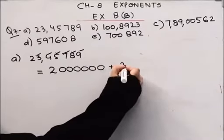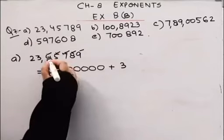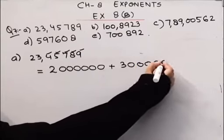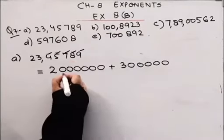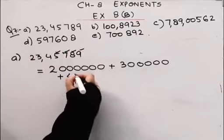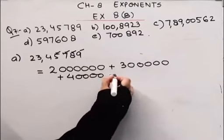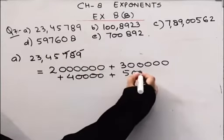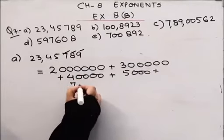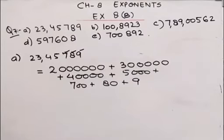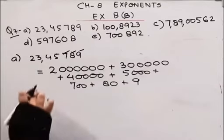Then I'll write 3 — how many zeros? 1, 2, 3, 4, 5. Plus I'll put 4 here — how many zeros? 1, 2, 3, 4. Then I'll put 5 — how many zeros? 1, 2, 3. Then you have 700, then 80, then 9. Clear? I have written this in expanded form. You used to write in expanded form like this in childhood. This was the expanded form.